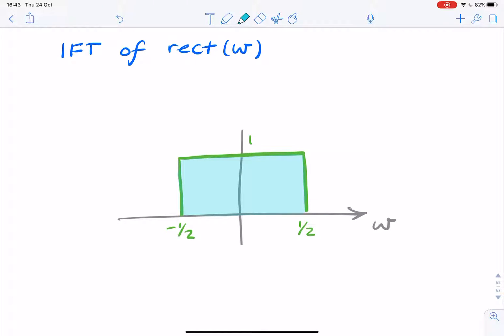Let's find the inverse Fourier transform of a rectangular function. A rectangular function in the frequency domain reminds us of what we would normally call a low-pass filter, or sometimes referred to as a boxcar function, or a brick wall function.